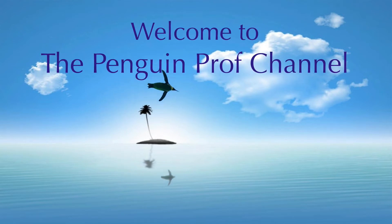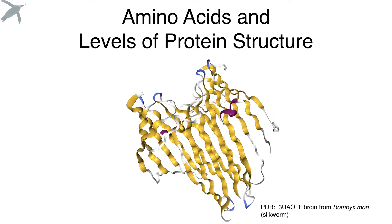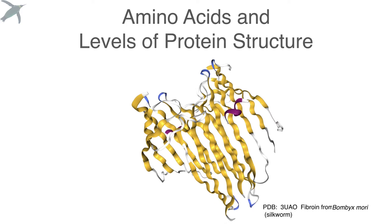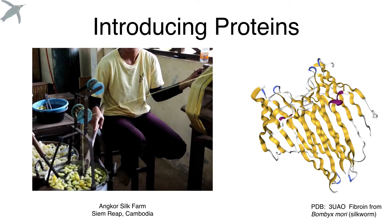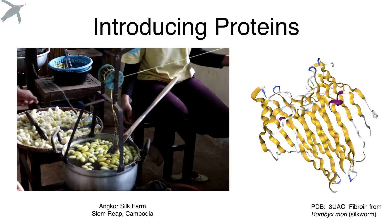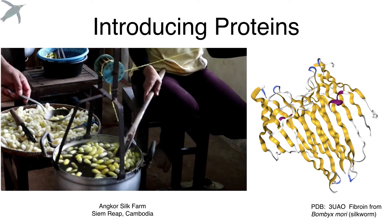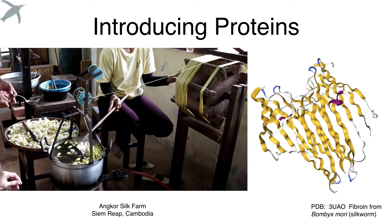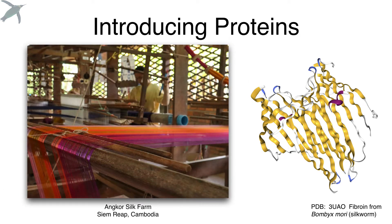Hello, and welcome to the Penguin Prof Channel. In today's episode, we're going to be talking about amino acids and levels of protein structure. This is a fibroin protein, and we're going to talk about how the structure and the chemistry of this protein accounts for the amazing properties of silk. These are cocoons from the larvae of the mulberry silkworms, some of the most famous silk in the world, and it is all about the chemistry that gives us the incredible properties of silk, including how strong and light-reflective it is.